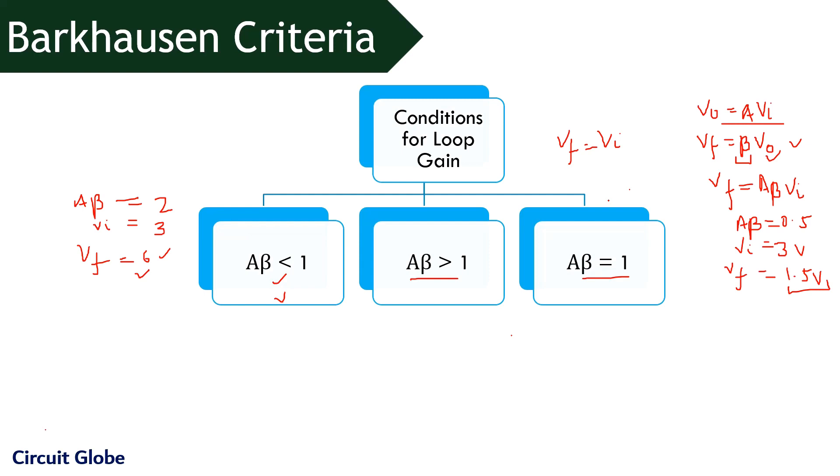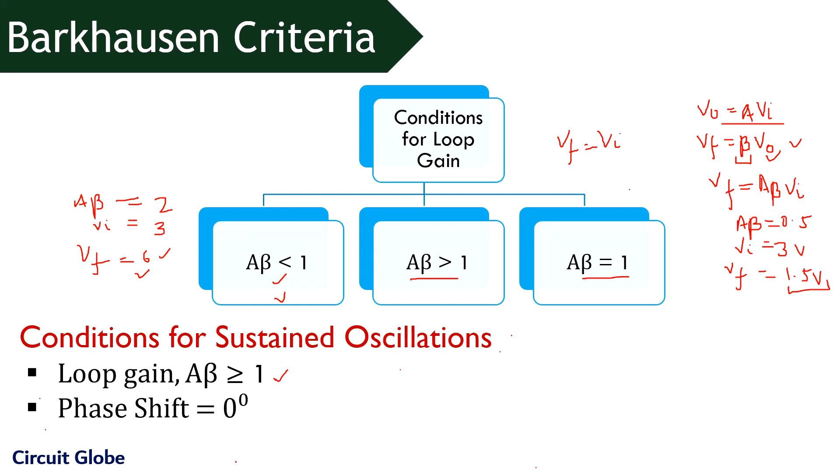But after a certain voltage, the loop gain become equal to 1 and this is due to the non-linear behavior of the feedback amplifier circuit. Thus, there are two conditions for sustained oscillations. The first one is, the open loop gain must be slightly more or equal to 1 and the second one is, the phase difference must be equal to 0, so that the output will be in phase with the applied input. This is Barkhausen criteria.